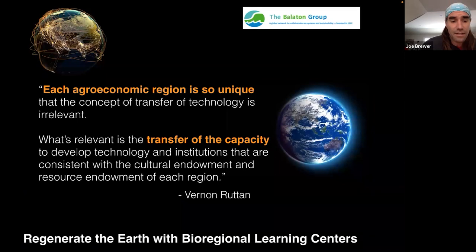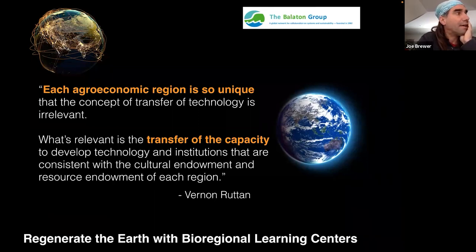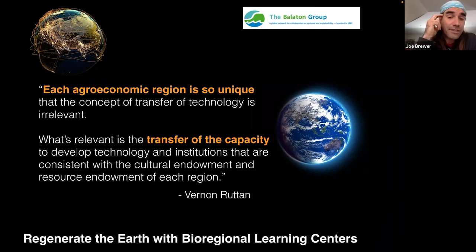This idea is not new. In 1983, at the end of a ten-year period of intense dialogue about how human beings could live within planetary limits, a report authored by Dana Meadows came out. She reported on learnings from ten years of work with major universities worldwide. One contributor, agronomist Vernon Rutten, said: each agroeconomic region is so unique that the concept of transfer of technology is irrelevant. What's relevant is the transfer of the capacity to develop technology and institutions consistent with the cultural endowment and resource endowment of each region.